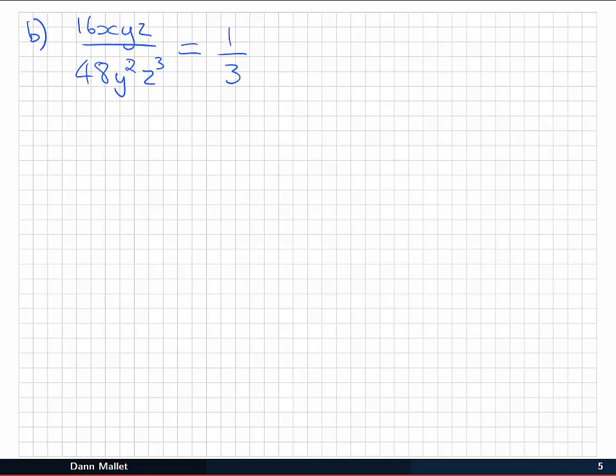I've got an x here but no x's on the bottom, so I'll just leave that as an x. I've got y to the 1 on the top and y to the 2 on the bottom. My index laws say that's y to the 1 minus 2. Similarly, z to the 1 minus 3.